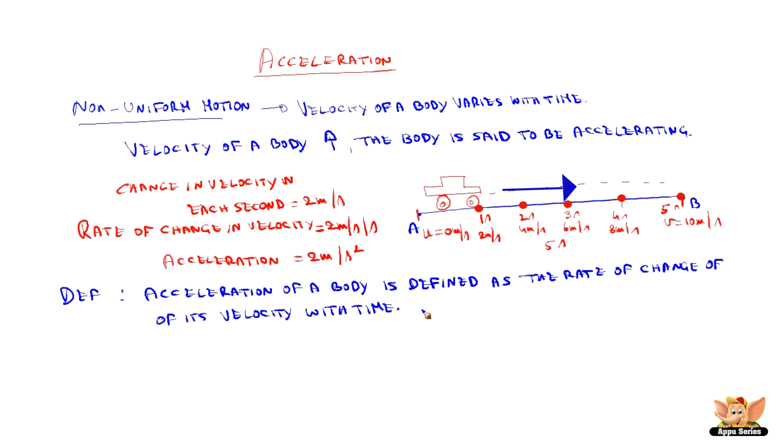So, acceleration is represented as A is equal to change in velocity divided by time taken for the change. So, the change in velocity is final velocity minus initial velocity, V minus U by T, where V is always greater than U.